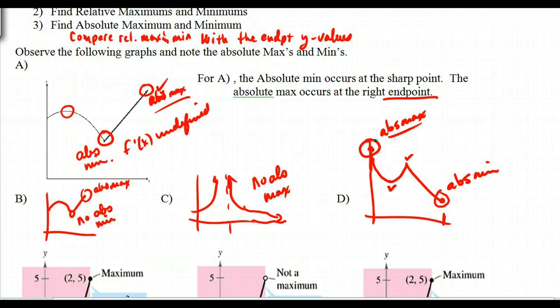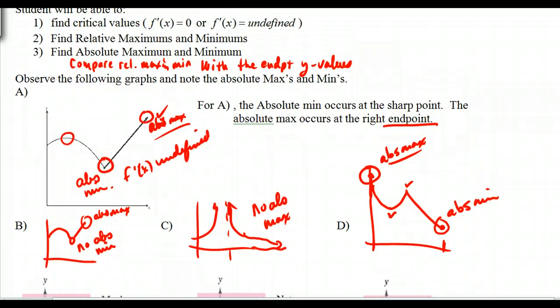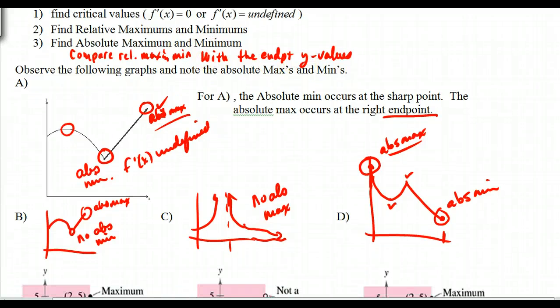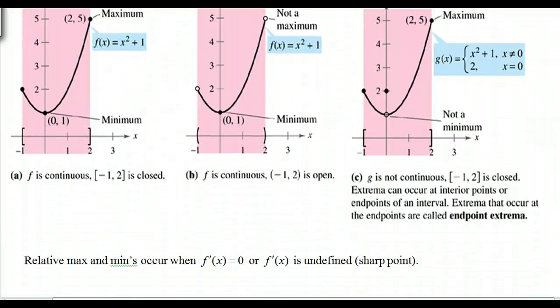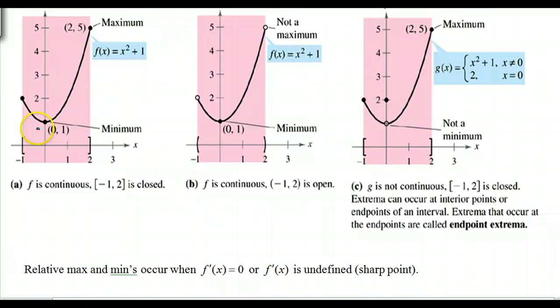If we have a critical value where f prime of x is equal to zero or undefined, it might be a possible absolute max or min. But then you also have to compare it with the endpoint y values to see if it is or not. Here's some more examples that we can run through quickly. This is an absolute min, that's the absolute max. That occurs at the endpoint, that occurs at a critical value.